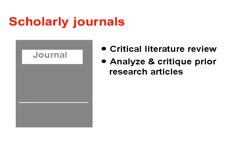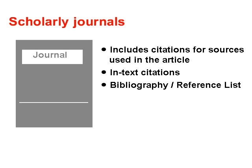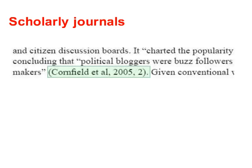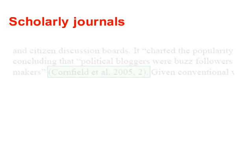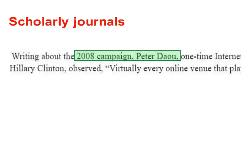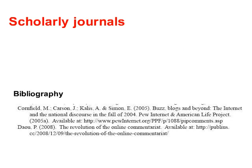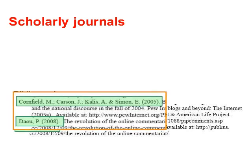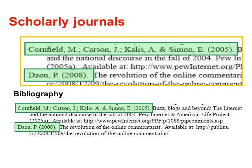The author will include a critical literature review, which is an analysis and critique of prior research articles. And when the author refers to ideas, concepts, or quotes from other articles and research, they will include citations to the original sources. This is done by including in-text citations throughout the article, and by including a complete citation to the original source in the article's bibliography, also known as a reference list.